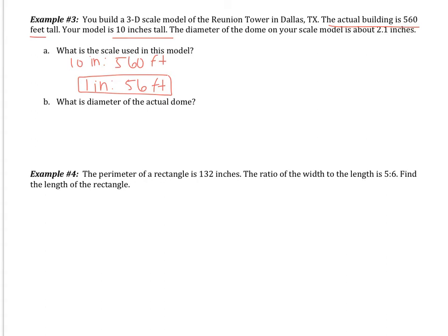So if you got A wrong, you probably got B wrong. But in B, you're going to need to set up a proportion. I know that 1 inch goes with 56 feet in real life. The diameter of the dome on your scale is 2.1 inches, or your scale model. So that 2.1 inches is going to go here. And I'm looking for the diameter of the actual dome in real life. From here, you should have used the cross products property. So I get X equals 56 multiplied by 2.1. And I get 117.6 feet. So the actual dome is about 117.6 feet.